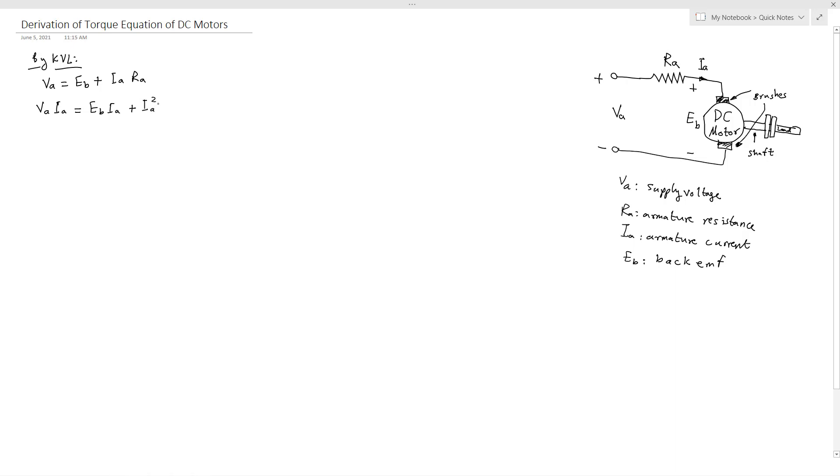This term represents the power loss due to heating of the armature coil, so this is power loss in armature winding. And this term represents the true effective mechanical power that is required to produce the desired torque of DC machine.